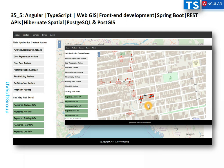A city may have thousands of registered plots of different types — residential, commercial, or industrial. Inside each plot you can register buildings, and as shown in the diagram, a plot may have multiple buildings with several floors and floor units. All this information is maintained by the city and can be viewed in the maps as the geo part, while the non-geo part handles registration, updates, deletions, and edits.